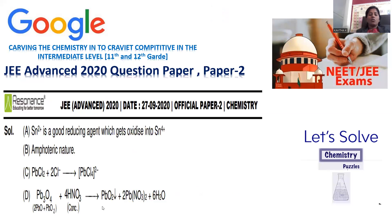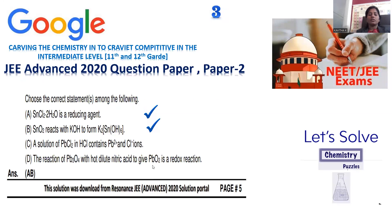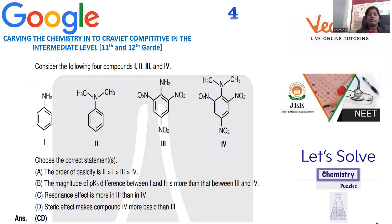The [PbCl4]²⁻ complex cannot be further ionized — it is the complex ion itself — so Pb²⁺ and Cl⁻ is not correct. Regarding the reaction of Pb3O4 with nitric acid: they say only lead oxide is produced, but lead nitrate is also formed as a product; they are not accounting for that. Therefore options A and B are the correct answers for question number three.